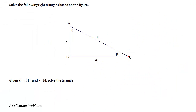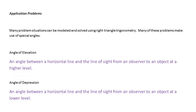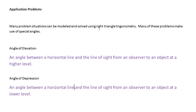Now let's look at some application story problems. These often use the terms angle of elevation and angle of depression. An angle of elevation is the angle formed between a horizontal line and the line of sight from an observer upward to something at a higher level. An angle of depression is the opposite — the angle from the horizontal downward to an object at a lower level.